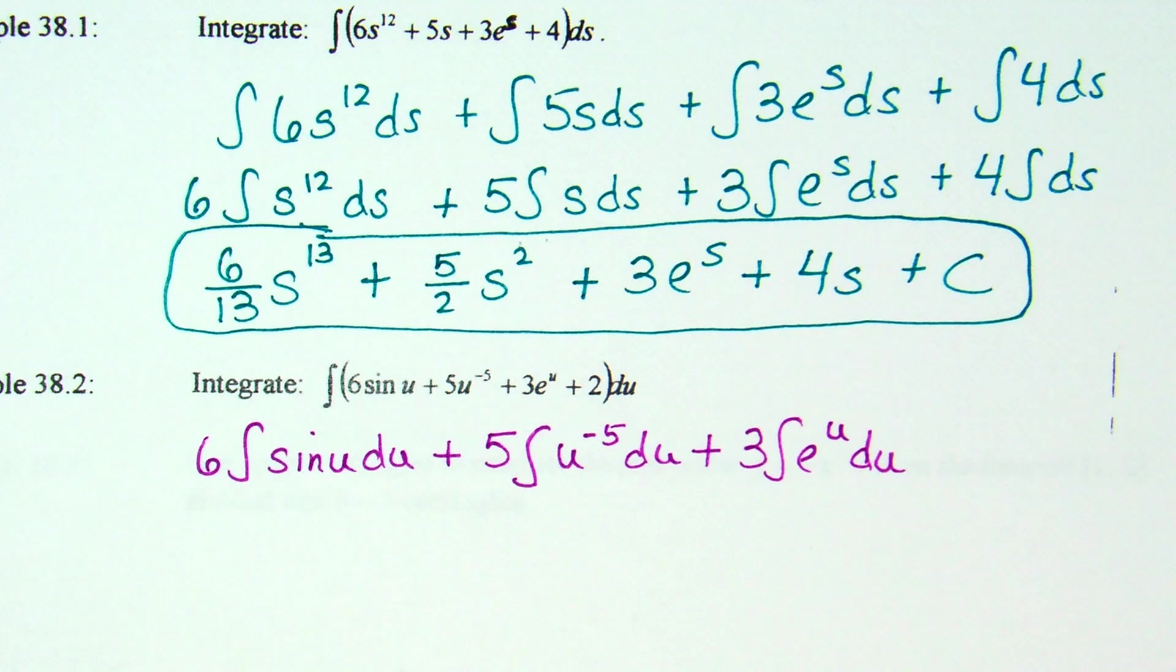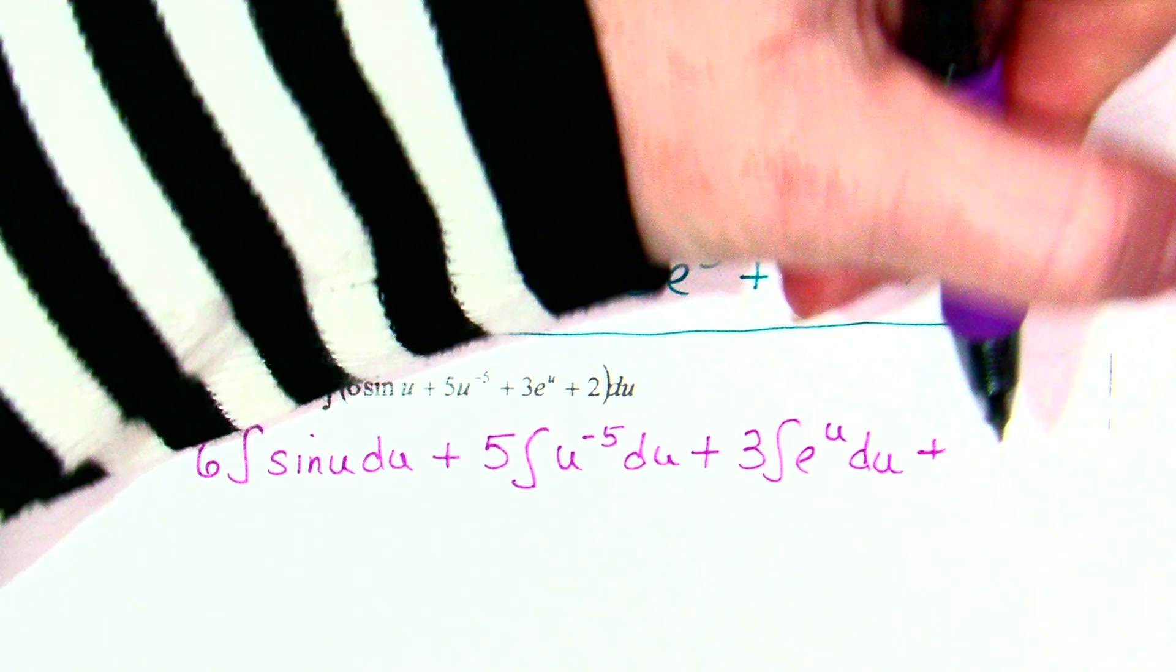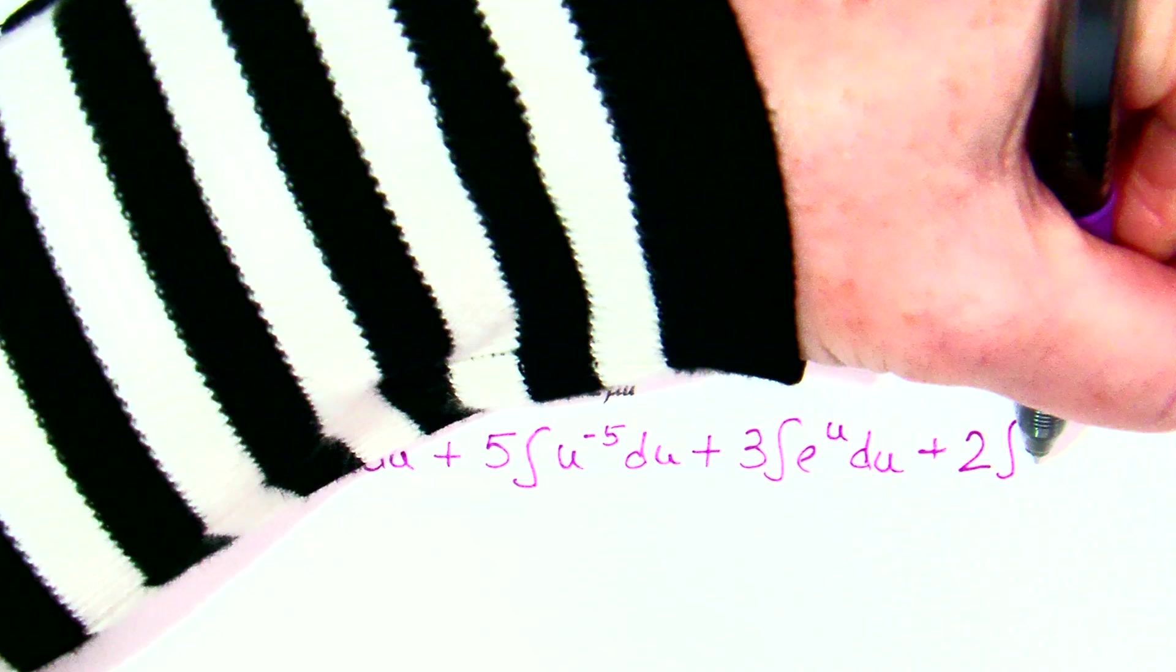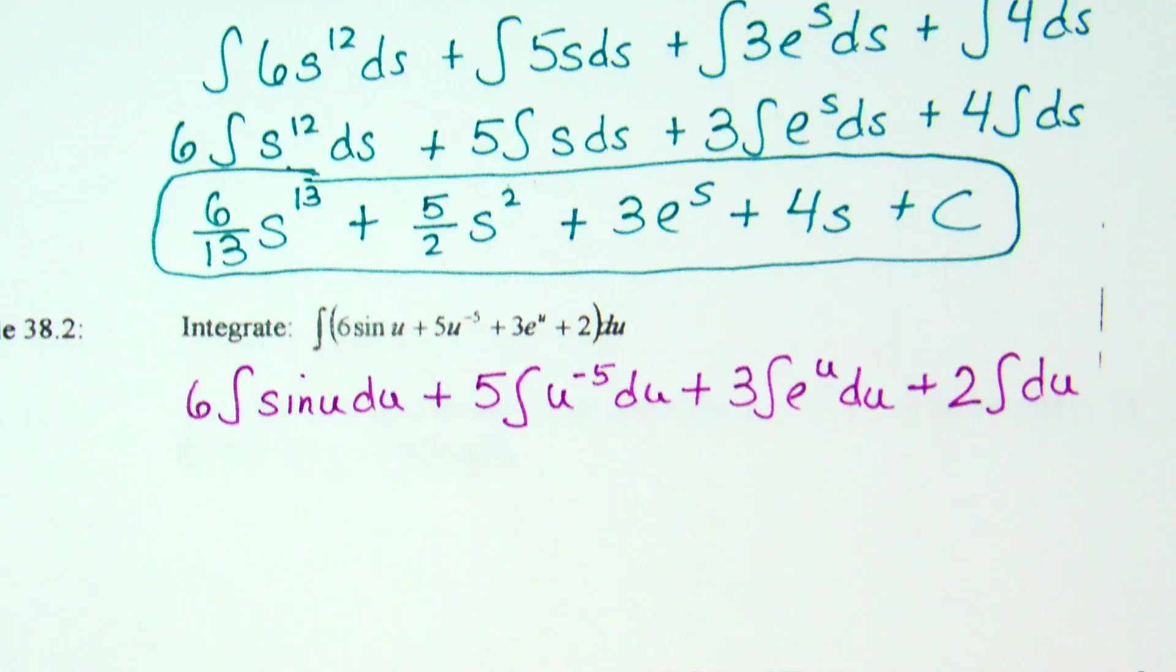Okay, and magic just happened. So it was pull the 5 out, 5 integral of u to the negative 5th du. Pull the 3 out, 3 integral of u to the negative 5th du. Plus, so it's 2, so if I do it like last time, 2 out front, integral of du.